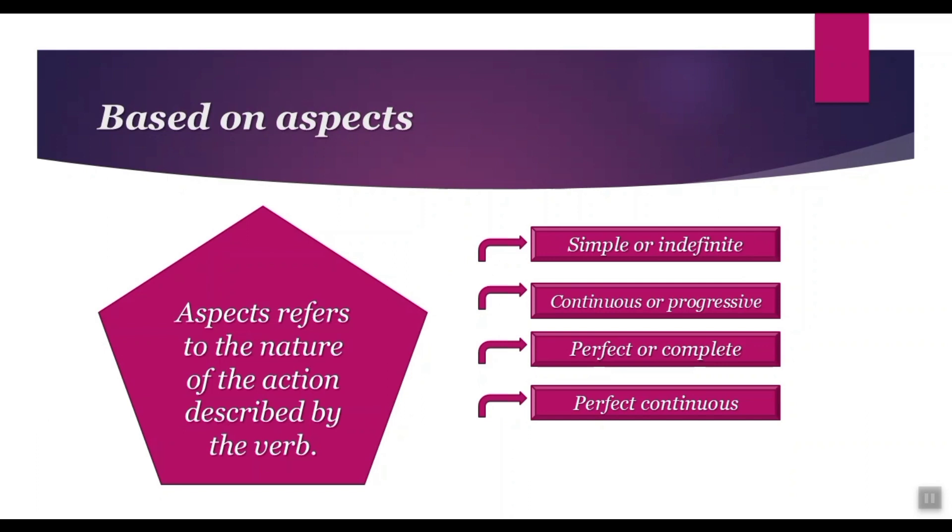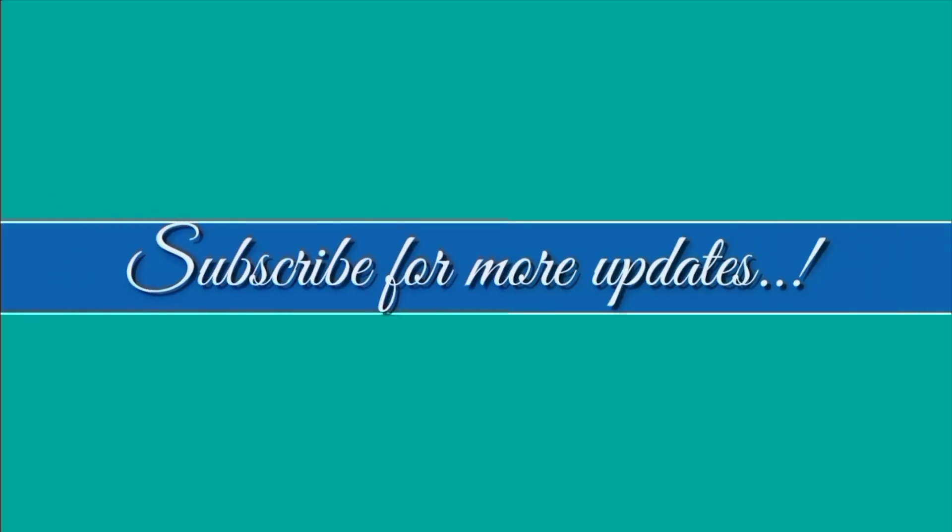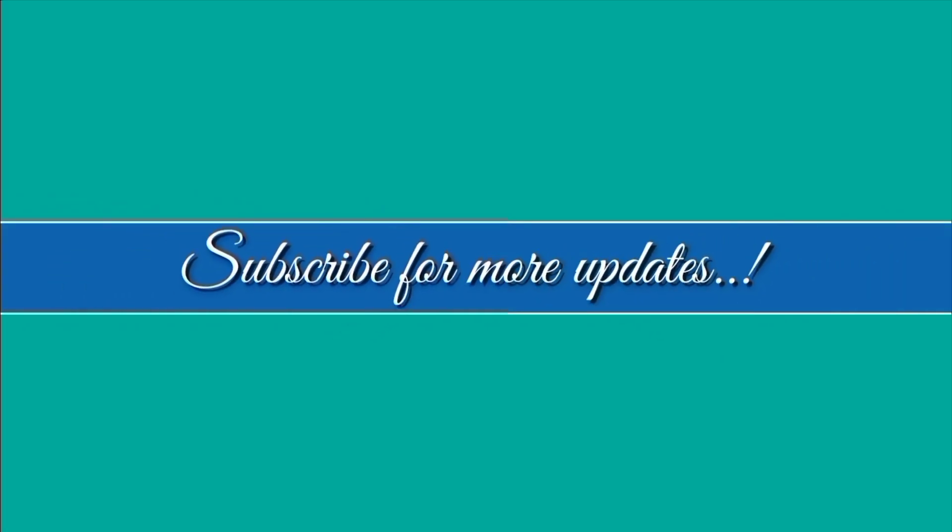There are several aspects in English grammar, including simple or indefinite, continuous or progressive, perfect or complete, and perfect continuous.